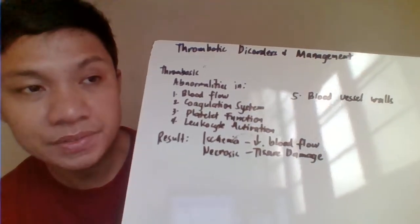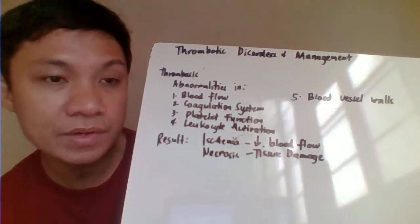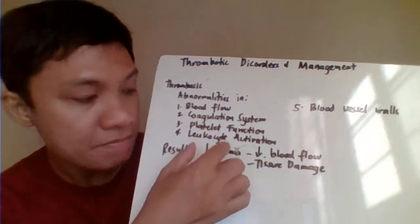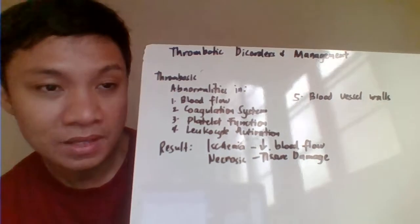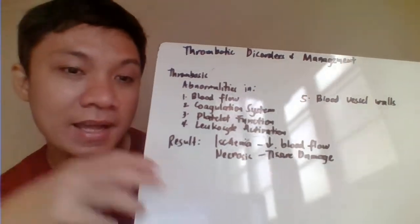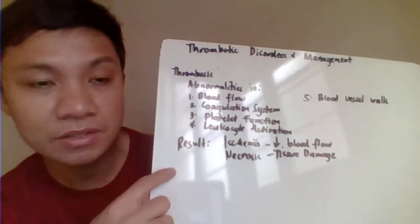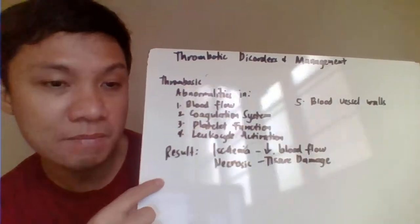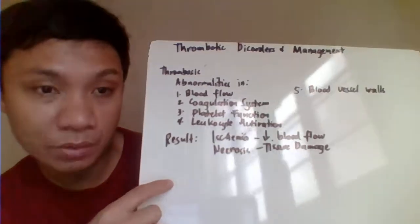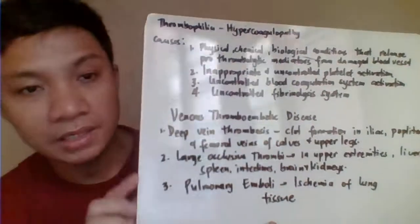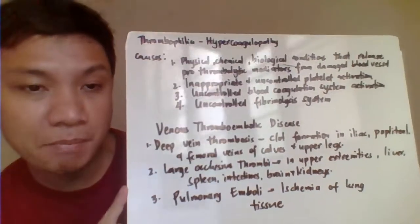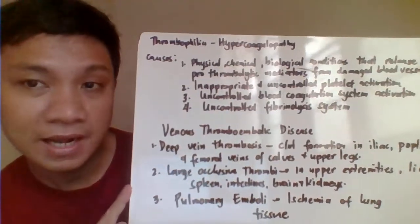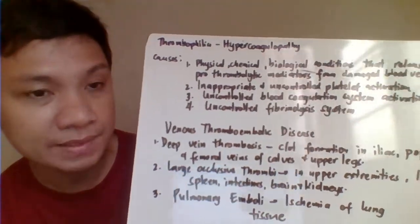Clot formation in thrombosis eventually results in ischemia, decreased blood flow, and can also result in tissue damage or tissue necrosis. We also have the term thrombophilia or hypercoagulopathy, which is still a type of thrombosis.